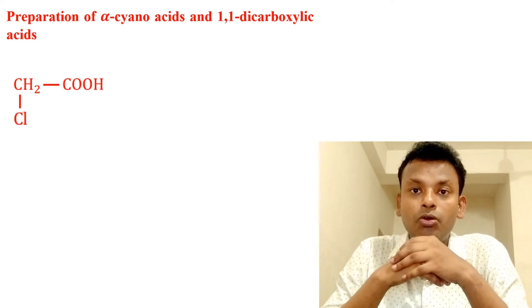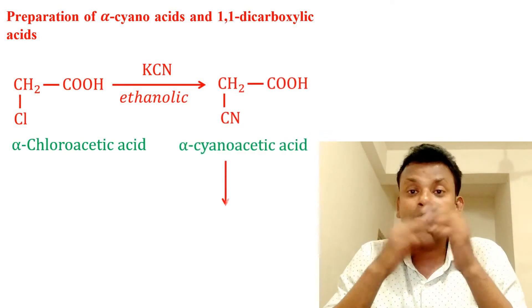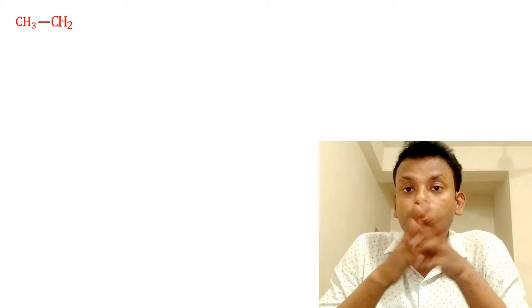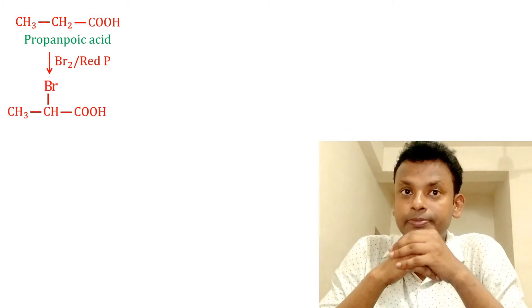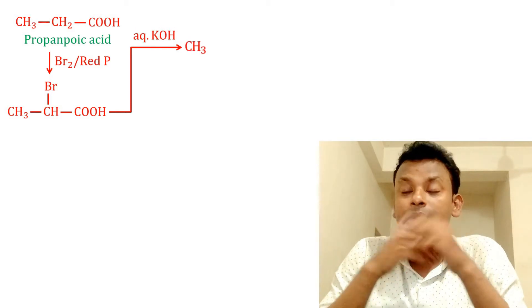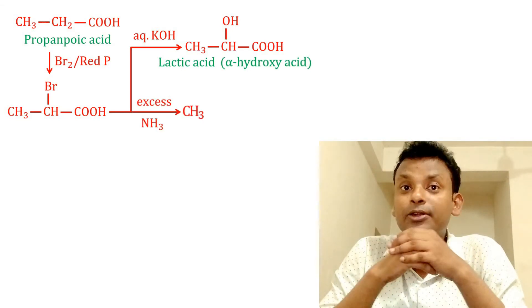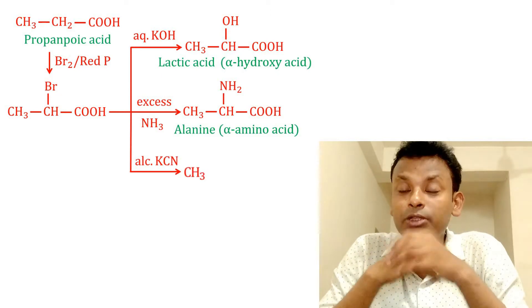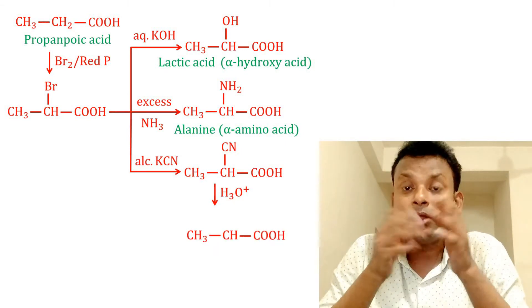Alpha chloroacetic acid reacts with alcoholic KCN to give alpha cyano acid, and hydrolysis with HCl under reflux gives 1,1-dicarboxylic acid. Another application: propanoic acid reacts with Br2 in the presence of red phosphorus to give alpha-bromo propanoic acid. Next, reaction with aqueous KOH gives lactic acid, which is alpha hydroxy acid. Reaction with excess NH3 gives alpha amino acid, that is alanine. Reaction with alcoholic KCN gives alpha cyano acid, and hydrolysis gives methyl malonic acid.